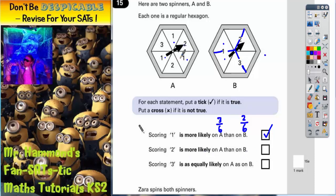Well, how many twos are there on A? Well, there is one there and there is one there. So that makes two out of six. And on B, there's a two here, but don't forget this two spans across two sections. So that is also two out of six.